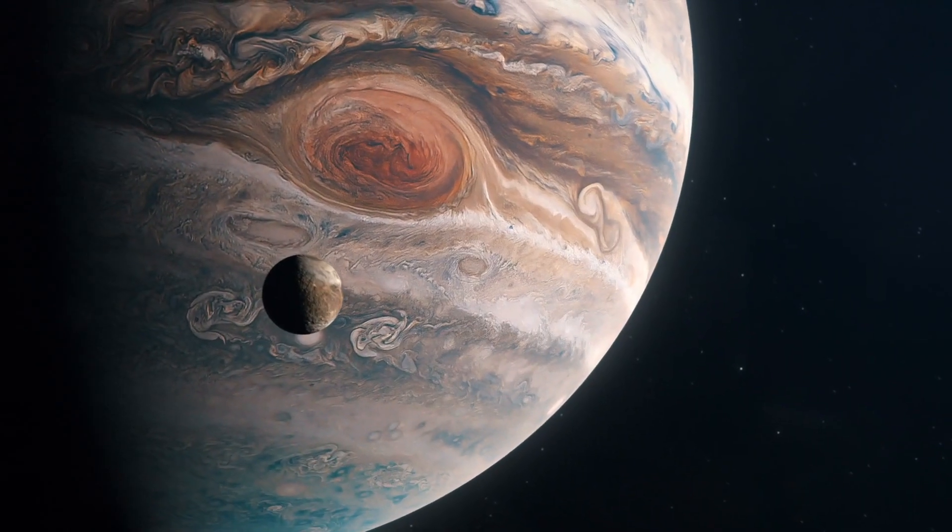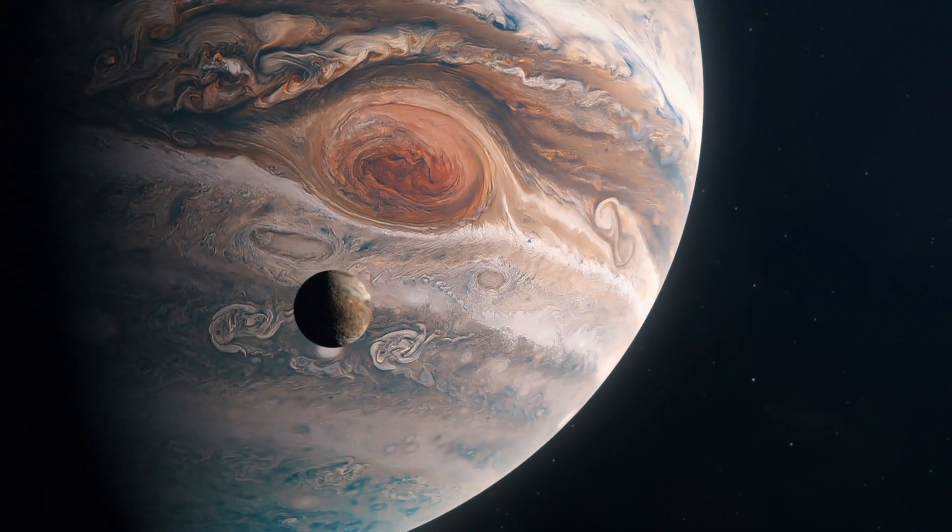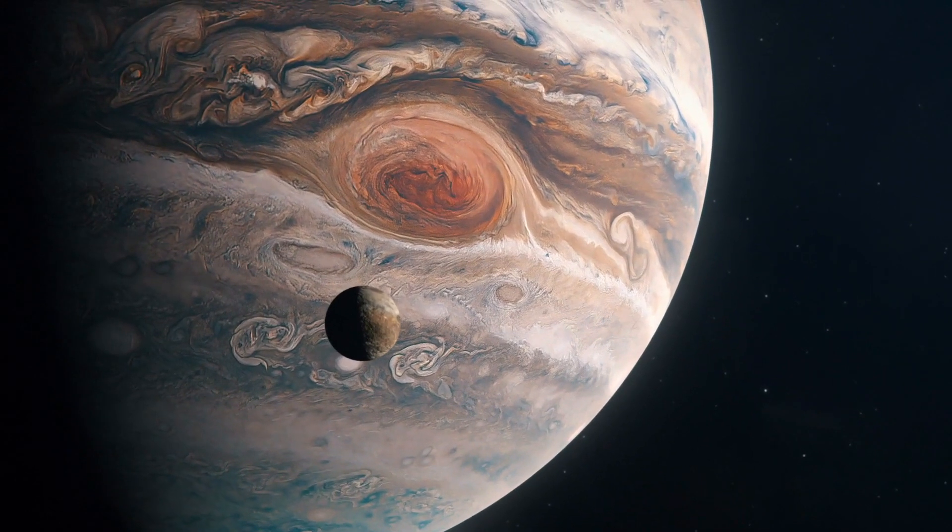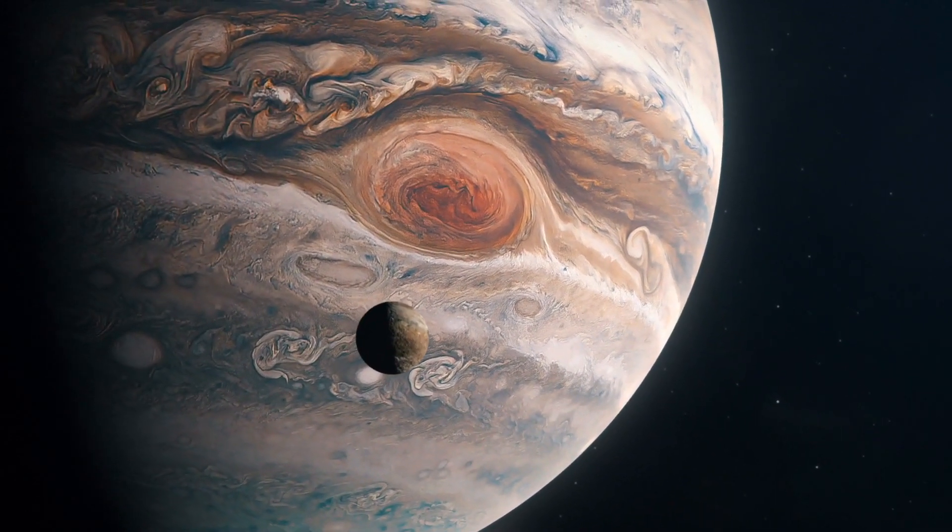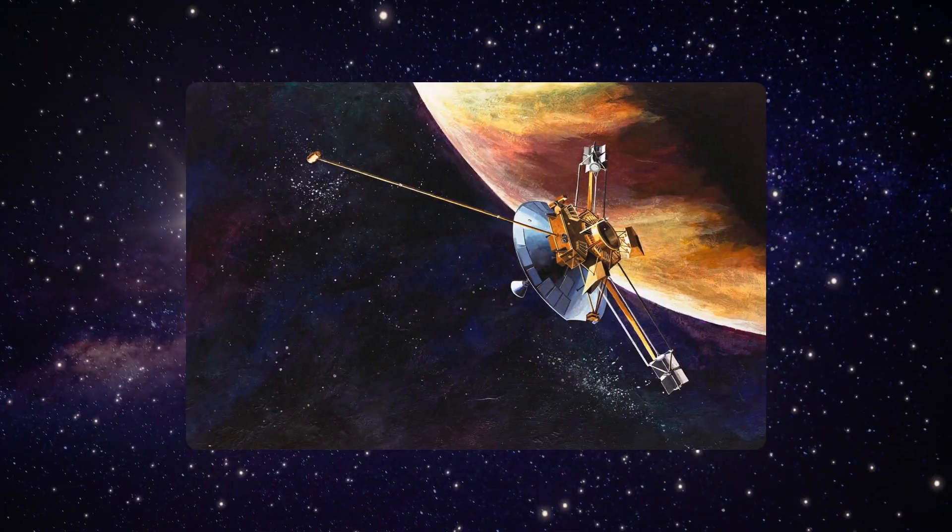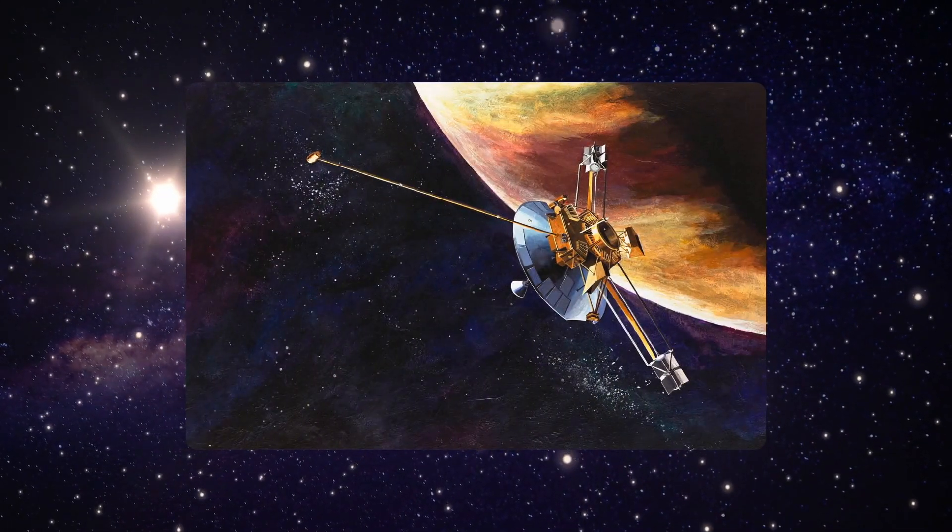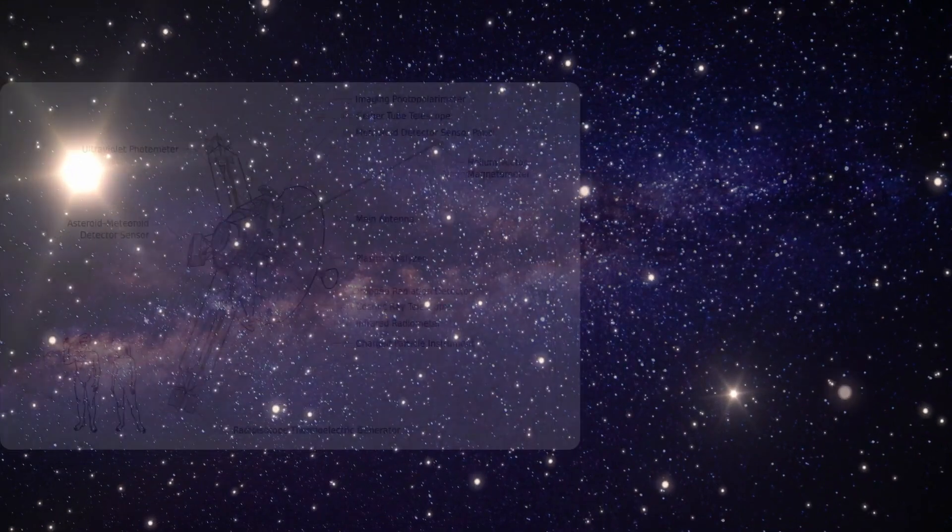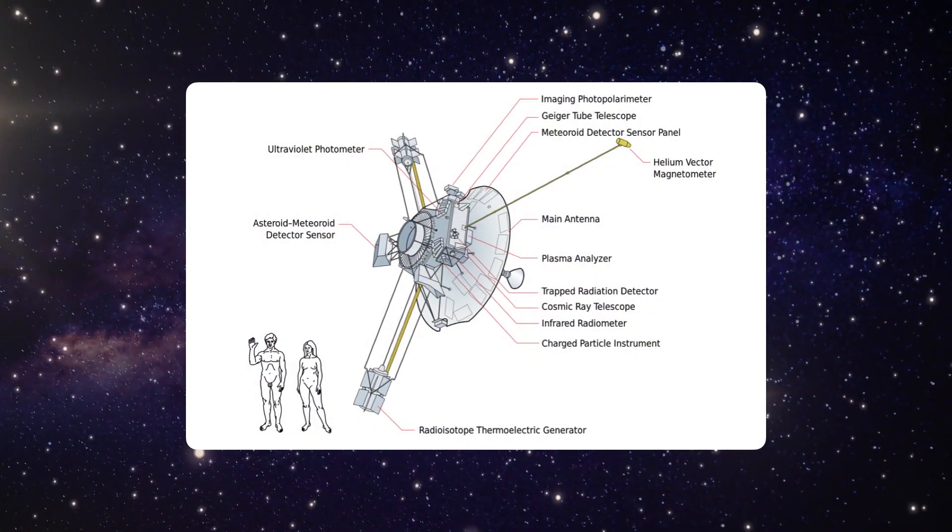Launched in 1972, Pioneer 10 was the first spacecraft to cross the asteroid belt and explore the solar system's largest planet, Jupiter. Pioneer 10 encountered Jupiter's incredibly powerful radiation belts and photographed three of the four Galilean moons: Ganymede, Callisto, and Europa.